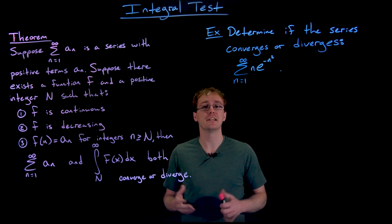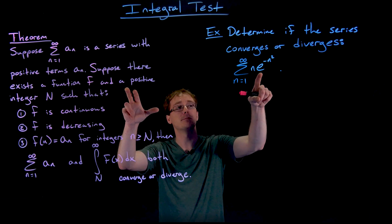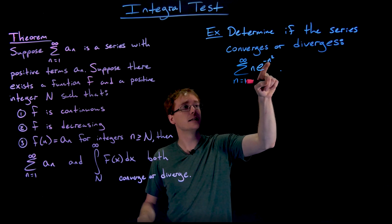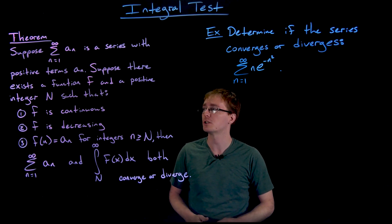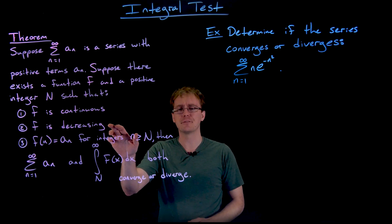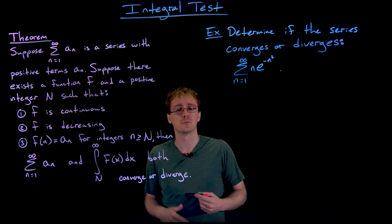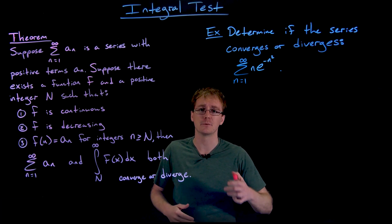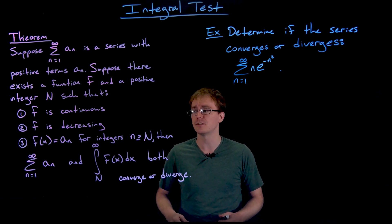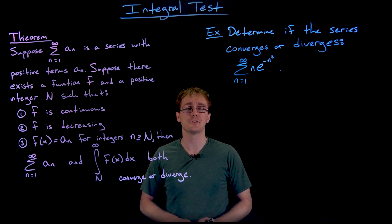So really quickly, we need to make sure that the integral test actually applies here. Is our function that describes the term in our series always positive? Yes, it is. Remember, e is raised to this negative power, but exponentials are always positive. Our function is definitely going to be continuous. We might have to do a little bit more analysis to see that it is decreasing, but we can take derivatives or look at the graph of this function, and we should be able to convince ourselves that it is decreasing, or at least after a certain point it is decreasing. And so yes, we do meet the criteria for the integral test.